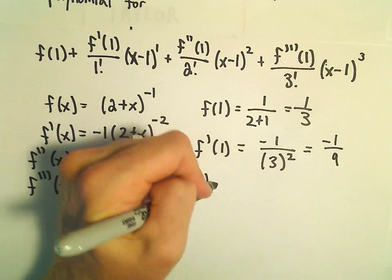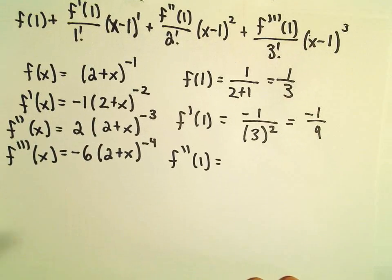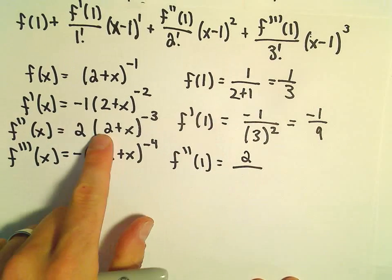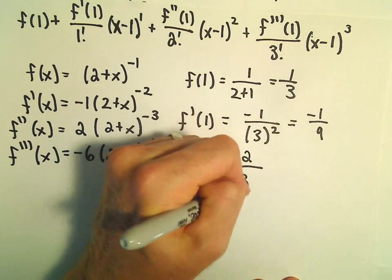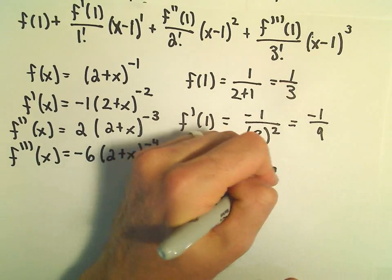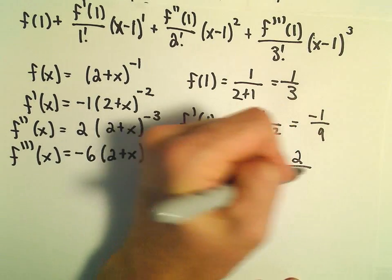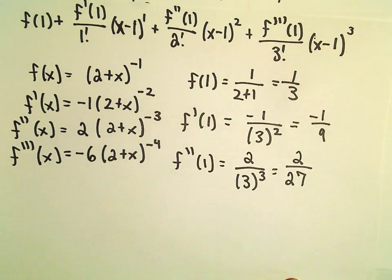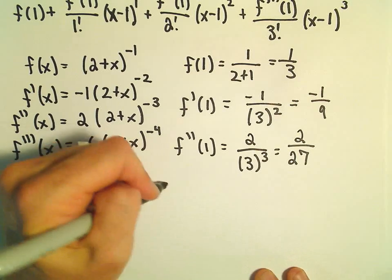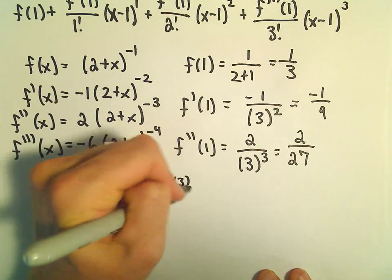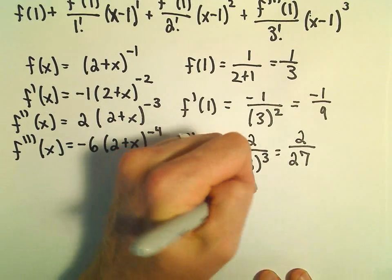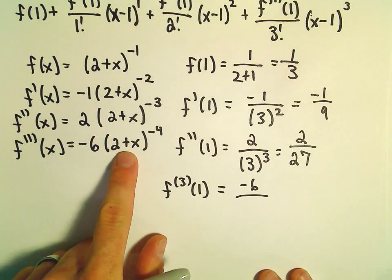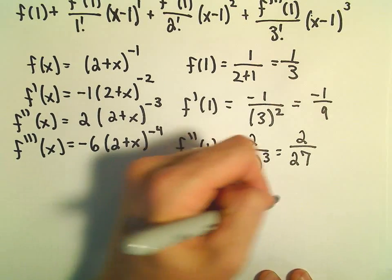f double prime of 1, that's going to be 2 over, let's see, 2 plus 1, so we're just going to keep getting 3's to the third power, so that's 2 over 27. And f triple prime of 1, that's going to give us negative 6 over 3 to the fourth power.